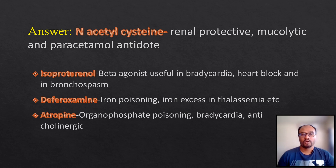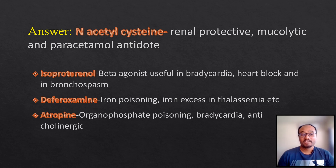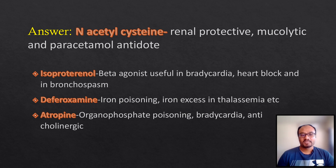N-acetyl cysteine is also used as a paracetamol antidote. Isoproterenol is a beta agonist useful in bradycardia, heart block, and bronchospasm. Deferoxamine is used in iron poisoning and in thalassemia where iron excess occurs. Atropine is used in organophosphate poisoning and bradycardia; it is an anticholinergic that decreases secretions in the body.